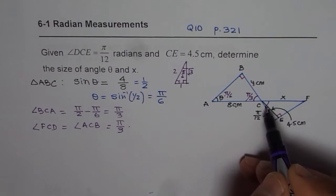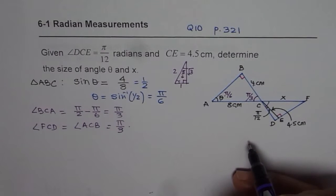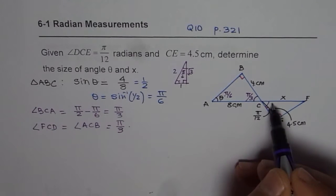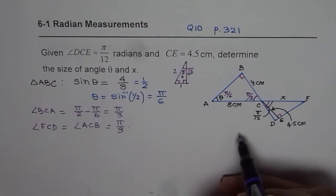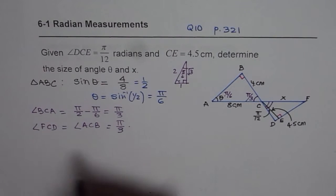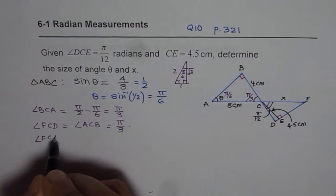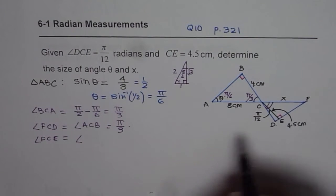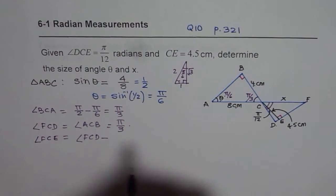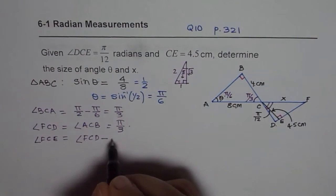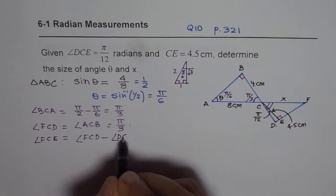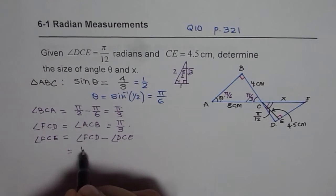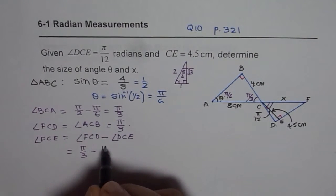So now we know this angle, the big angle is π/3. We know that angle DCE is π/12. And from there we can find what angle FCE should be. So angle FCE should be equal to angle FCD, the big angle, minus the small angle which is angle DCE. So that gives you the total angle is π/3 take away π/12.